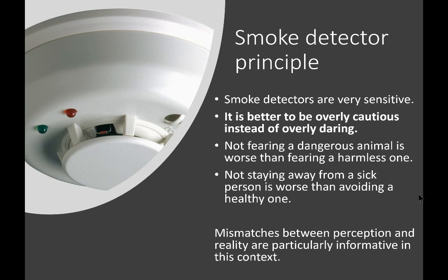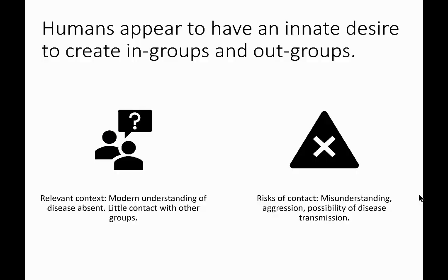Mismatches between perception and reality can be particularly informative in this context. Humans appear to have an innate desire to create in-groups and out-groups — this is fairly universal around the world, distinguishing between us and them. In the context of our evolutionary history, the modern understanding of disease was absent and they had little contact with other groups. There were lots of risks to contact: misunderstanding, aggression, and, critically, the possibility of disease transmission. Maybe these risks of contact were embedded in our evolutionary psychology.